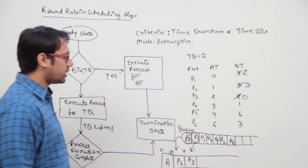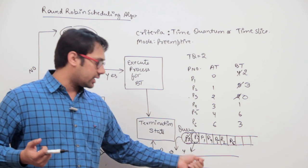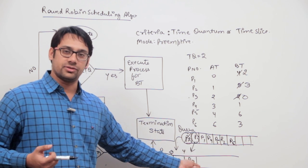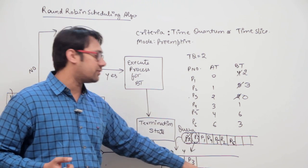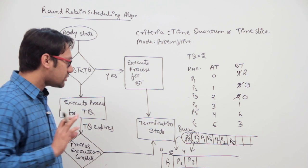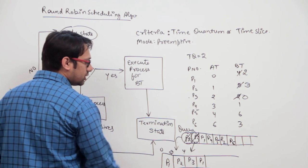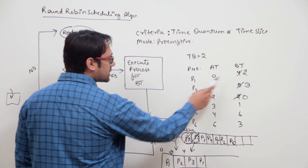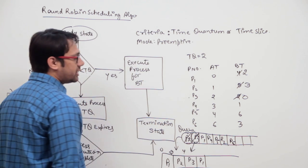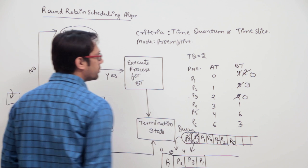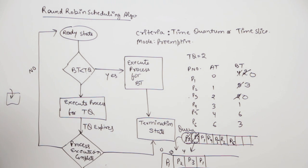For every process in the queue, we execute it for the time quantum. If the process is finished, we do not put it back; if not, we put it back in the queue. The next process is P1. The burst time of P1 is now 2, so we execute it until time unit 8, at which point it becomes 0. Since the time quantum expires and execution completes, P1 goes to the termination state.